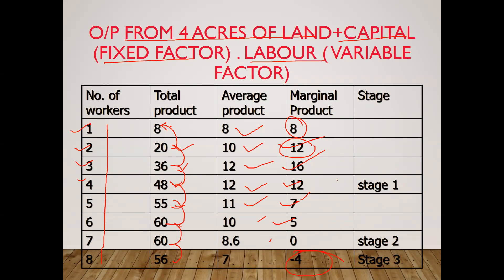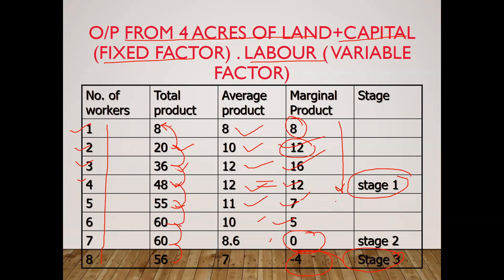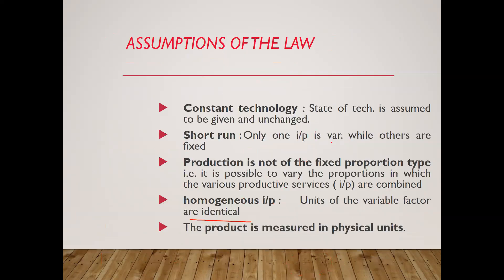Stage 1, stage 2, and stage 3: stage 1 ends when average product equals marginal product. Stage 2 ends when marginal product becomes 0. Stage 3 is when marginal product is negative. We will discuss all these stages in the next video. I am sure this lecture would be helpful to you. In the next video, we will understand how to correlate this table with the curve. Thank you and keep watching. Stay tuned.